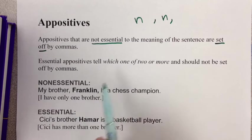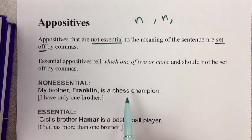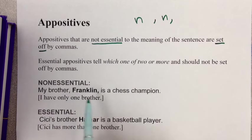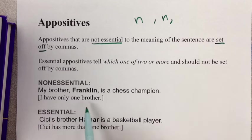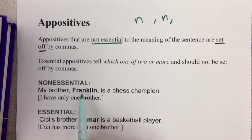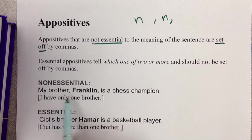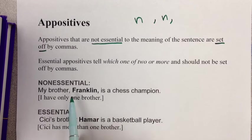Here's a non-essential example: 'My brother, Franklin, is a chess champion.' Because there are commas on both sides of 'Franklin,' we can assume I only have one brother. Franklin is not essential — it doesn't matter whether we know his name to understand who the chess champion is, because I only have one brother and his name is Franklin.